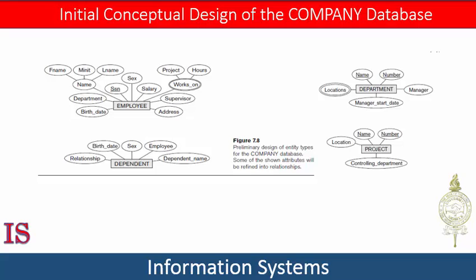It is a constraint that prohibits any two entities from having the same value for the key attribute at the same time. An entity type may also have no key, in which case it is called a weak entity type. The dependent entity would be an example of a weak entity, and by defining those three attributes as a unique key, we are satisfying the requirement that the primary key be defined for every entity. In the case of a weak entity, the primary key may consist of two or more attributes that make up the entity.